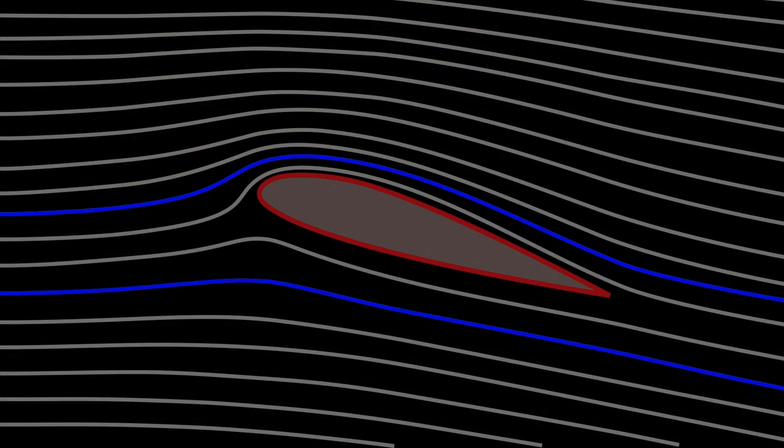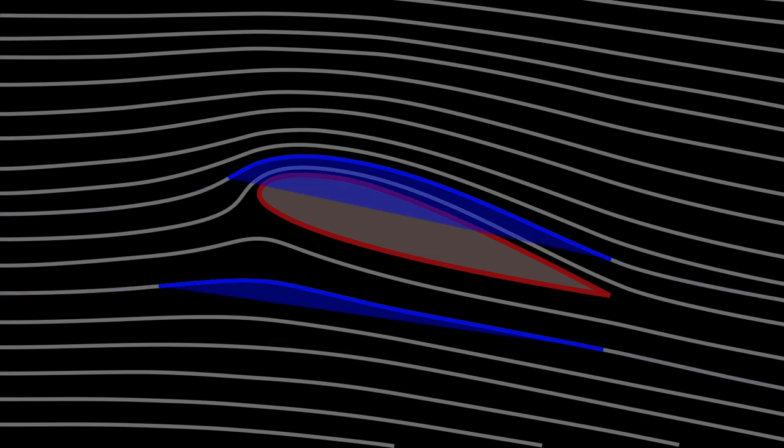For a streamline to bend, the parcel of air must be accelerating centripetally towards the inside of the bend because of a pressure gradient.